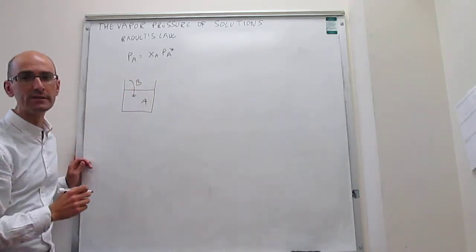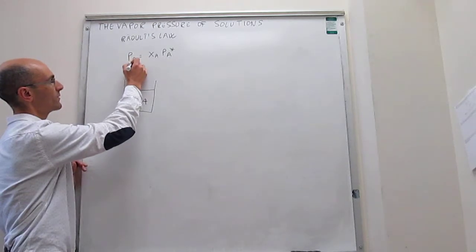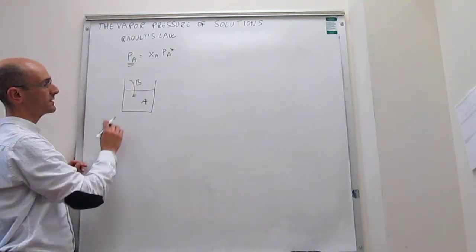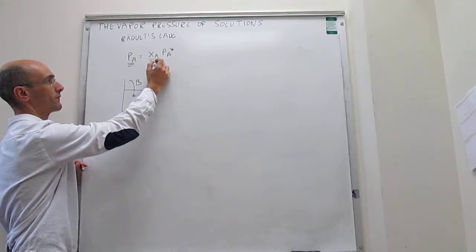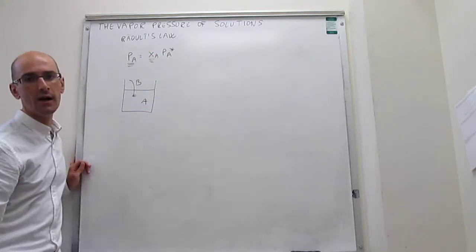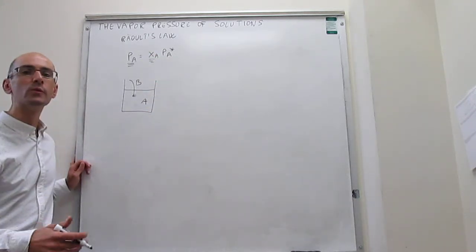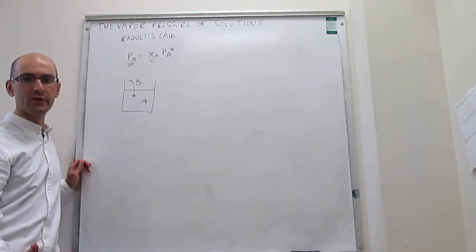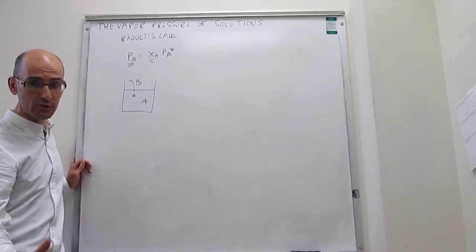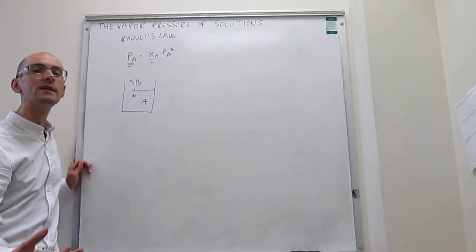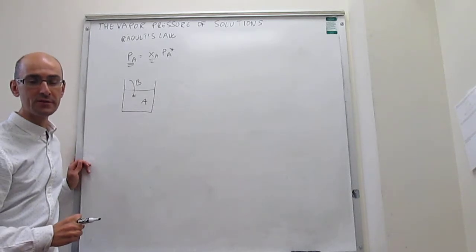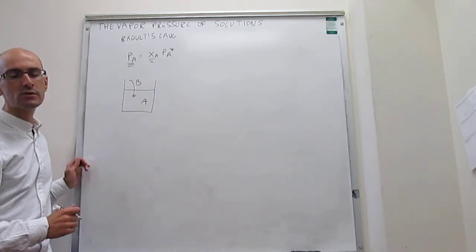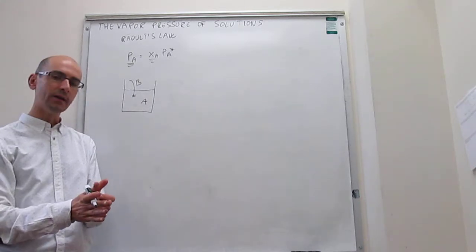There is a direct proportionality between the vapor pressure of that solvent in the mixture with the mole fraction of the solvent in the mixture. So the more solvent you have, the higher the vapor pressure of that solvent. The more solute you add, the lower the vapor pressure of that solvent.